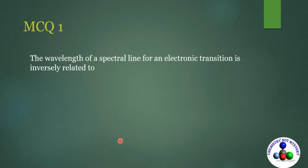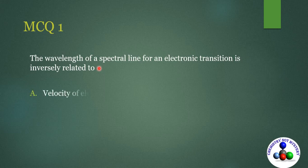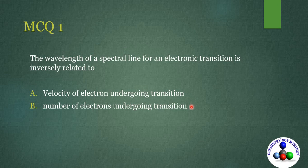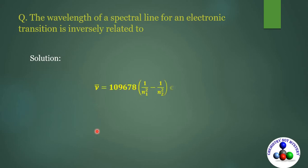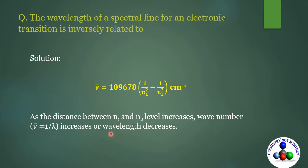Question 1: The wavelength of a spectral line for an electronic transition is inversely related to — (A) velocity of electron undergoing transition, (B) number of electrons undergoing transition, (C) the difference in energy levels involved in the transition, or (D) none of these. From the Rydberg formula, as the distance between n1 and n2 levels increases, wave number increases, or wavelength decreases since nu-bar equals 1/lambda. So C is the correct option.